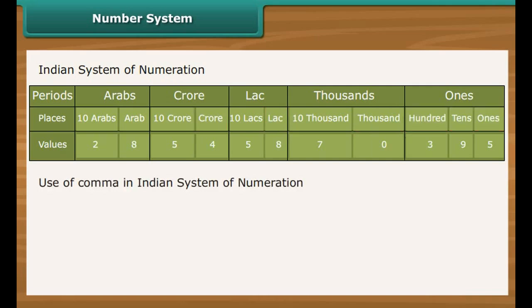Commas are used to mark thousands, lakhs, and crores. The first comma comes after hundreds place, three digits from the right, and marks thousands. The second comma comes two digits later, five digits from the right. It comes after ten thousands place and marks lakh. The third comma comes after another two digits, seven digits from the right. It comes after ten lakh.